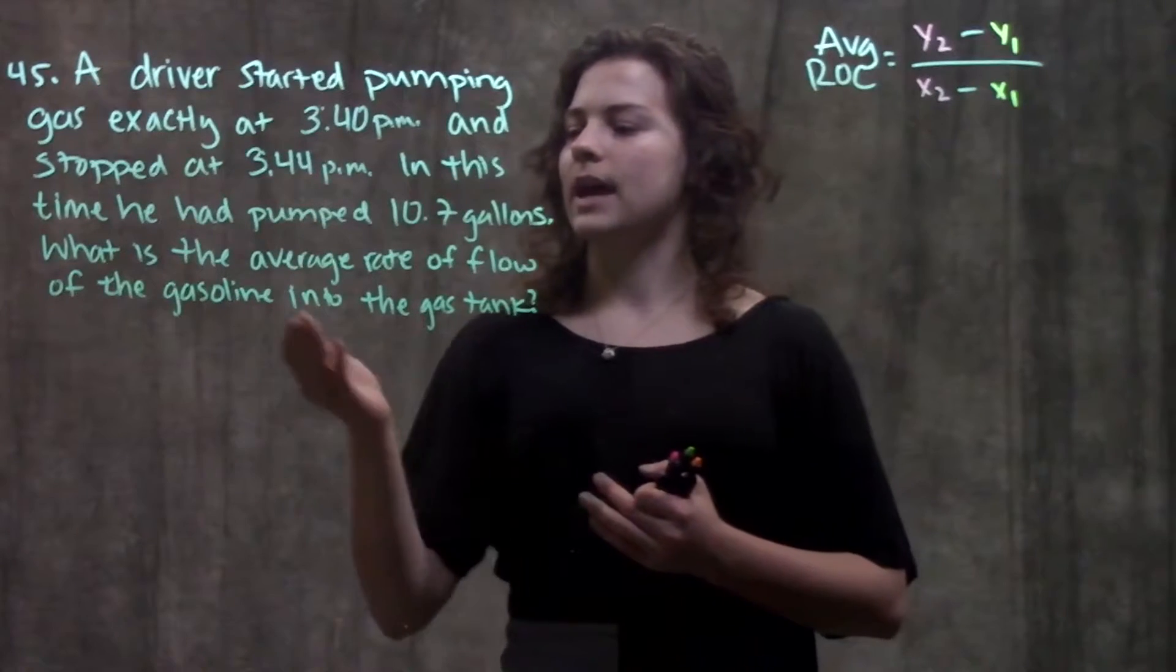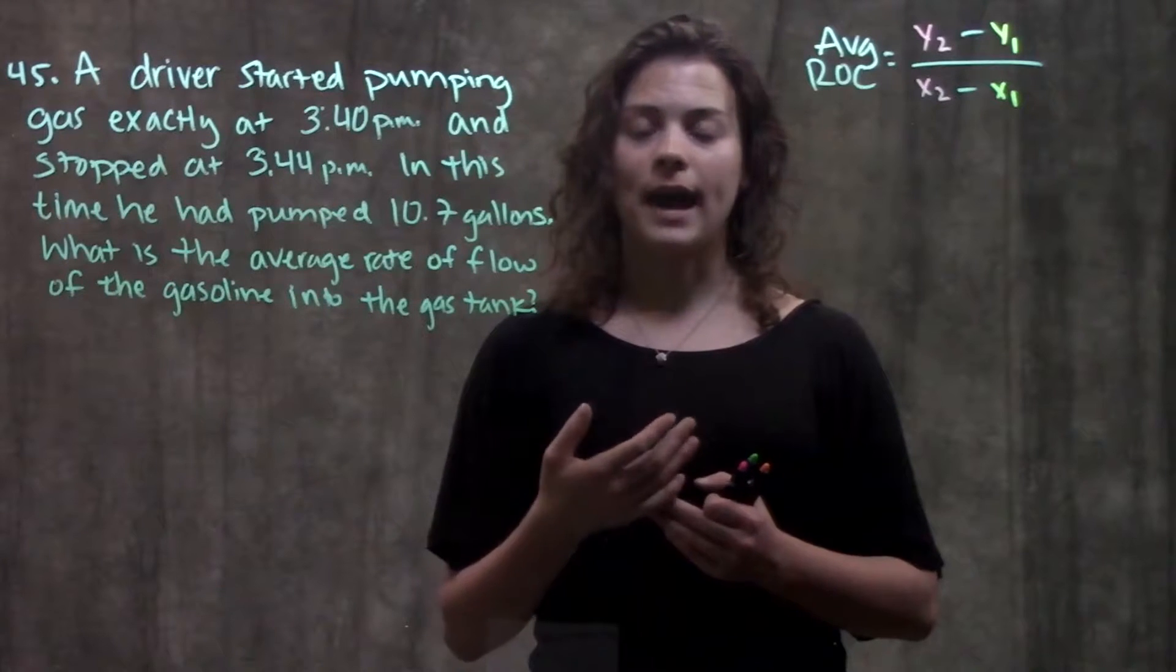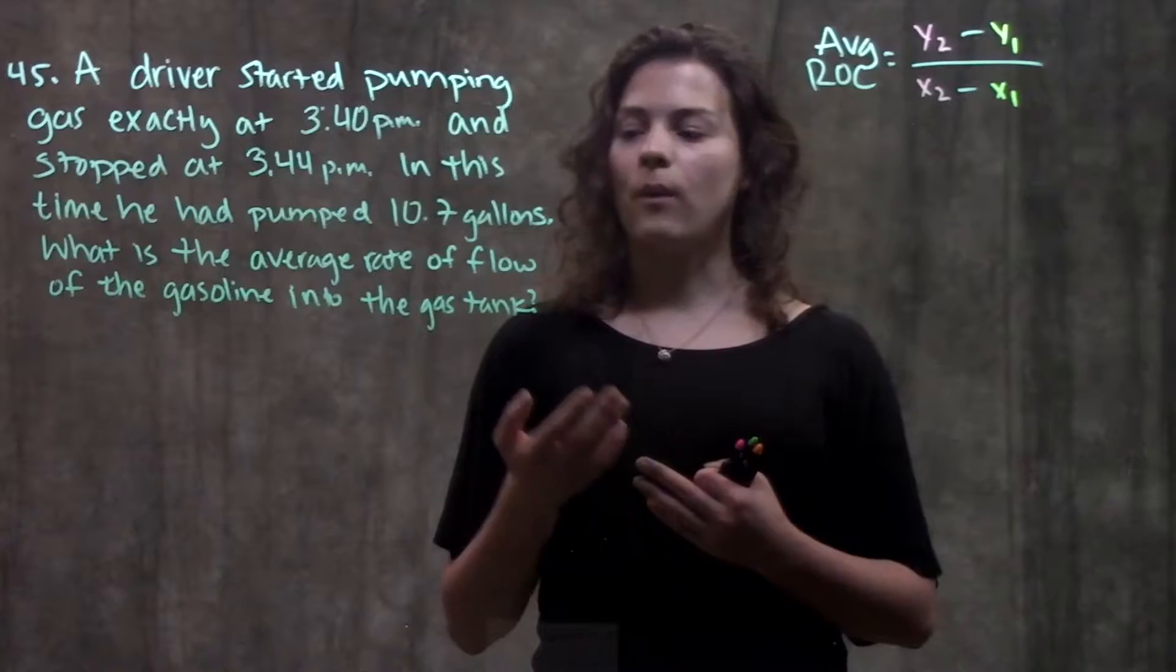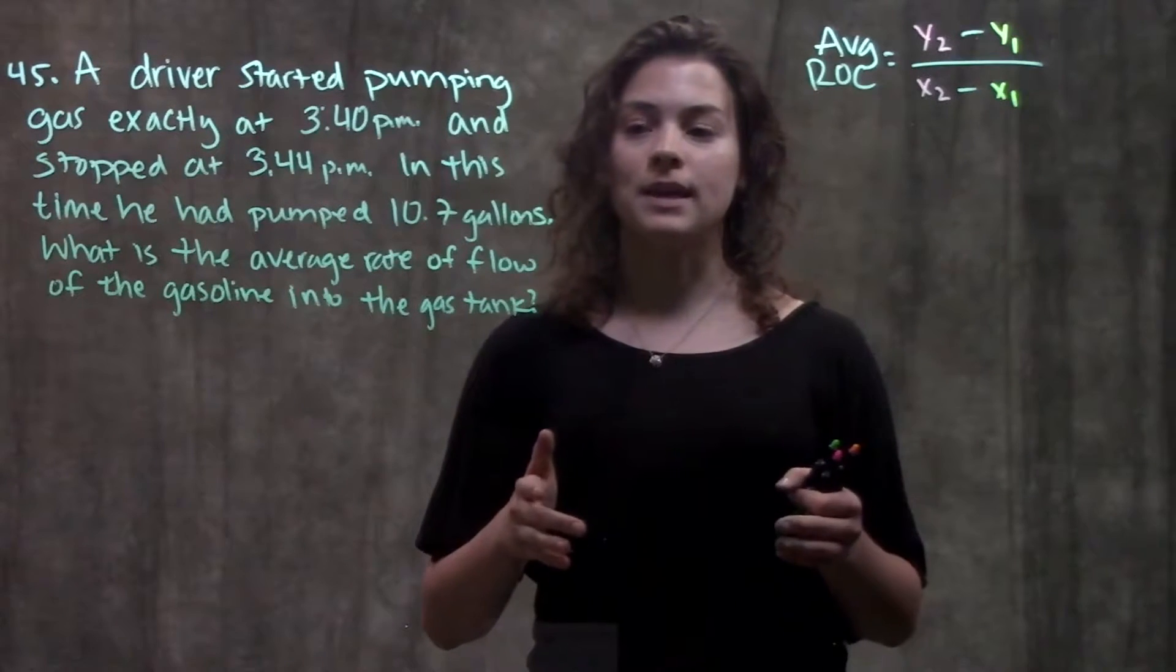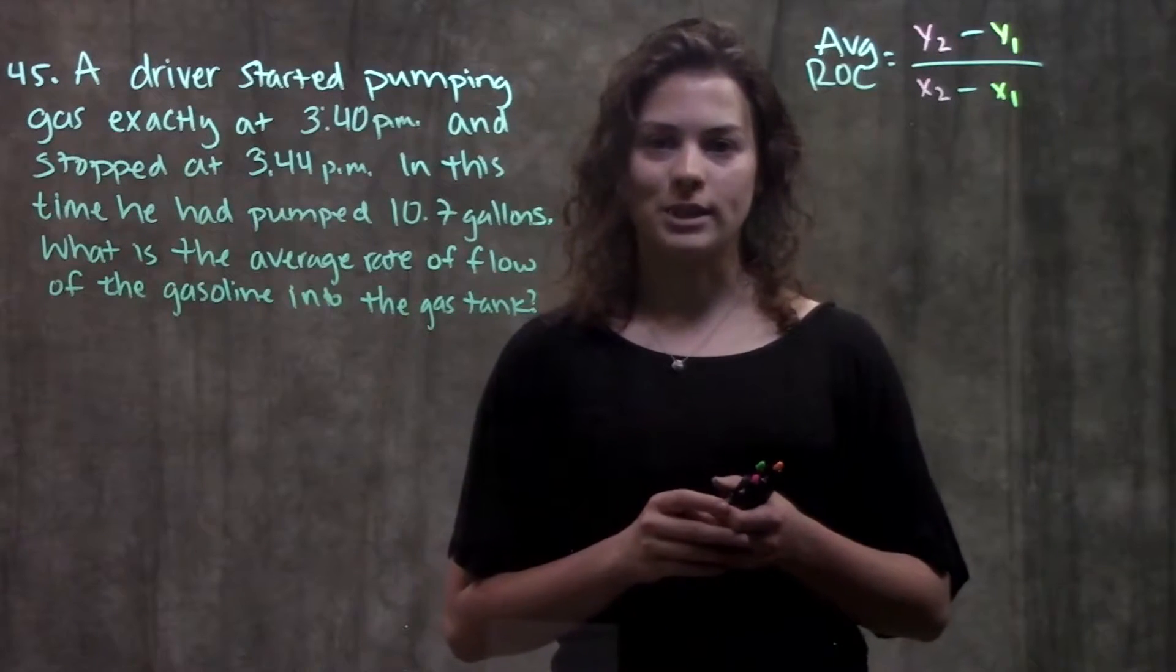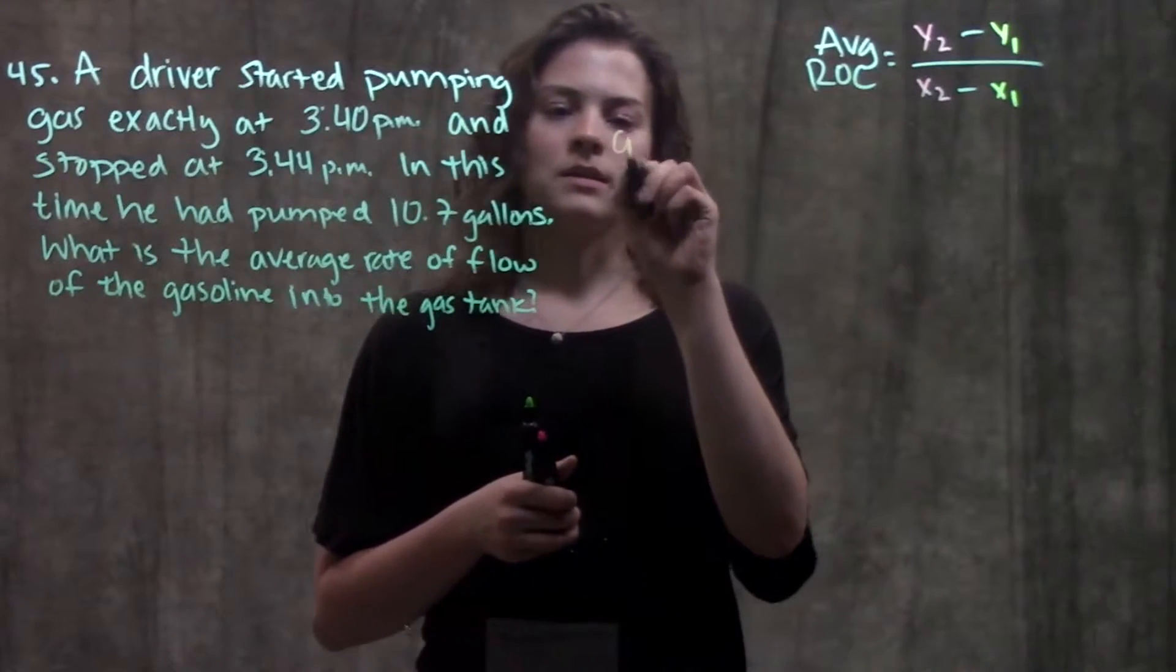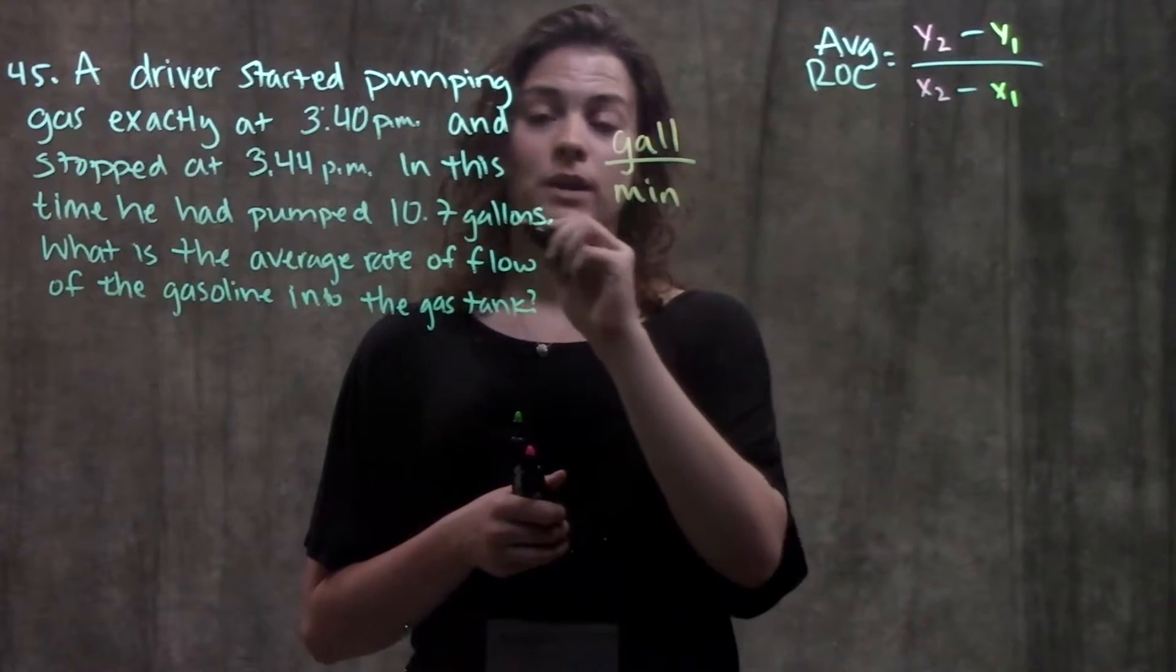So one way to think about this is that you see the question, they're asking for the average rate of flow of gas into the tank. If you were to answer this question, you would say, well, there was this many gallons in the tank per this many units of time. So maybe like three gallons per second. That might be how you might answer this question.